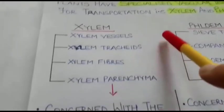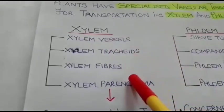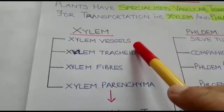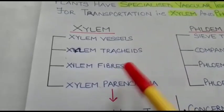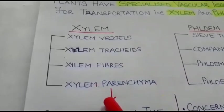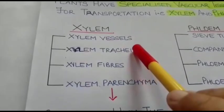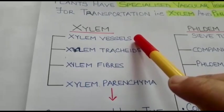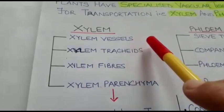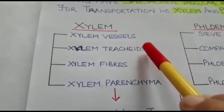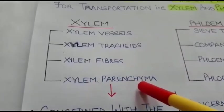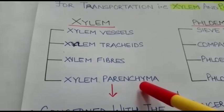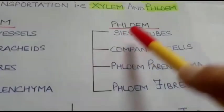Xylem has four different types of cells: xylem vessels, xylem tracheids, xylem parenchyma, and xylem fibers. Out of these four cells, xylem vessels are dead cells, tracheids are dead cells, and fibers are dead cells. Only the xylem parenchyma are the living cells.